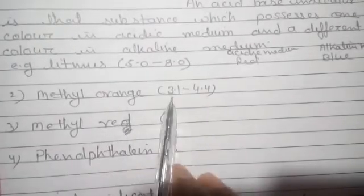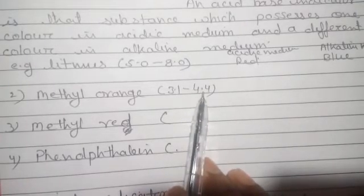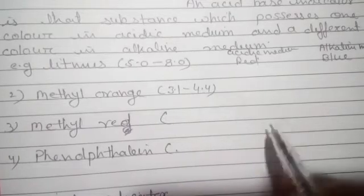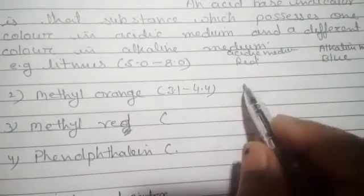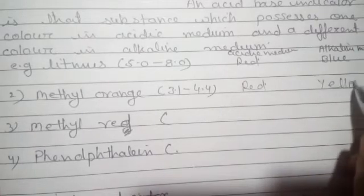The pH range of methyl orange is 3.1 to 4.4. In acidic medium it gives red color and in alkaline medium it gives yellow color.